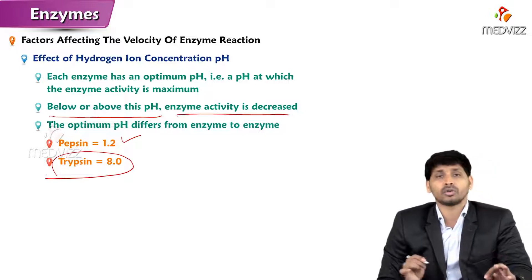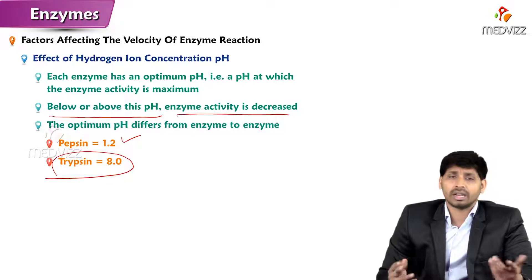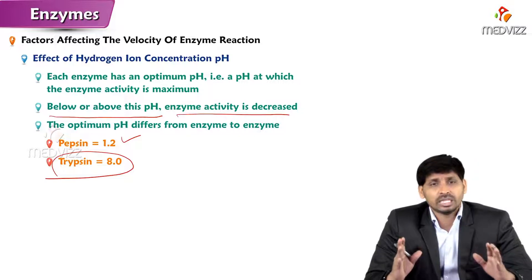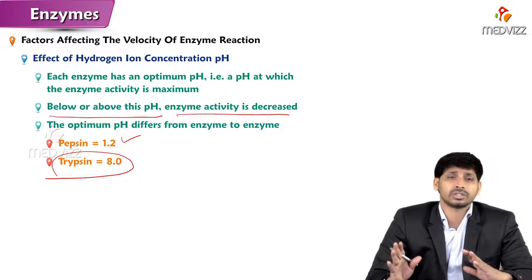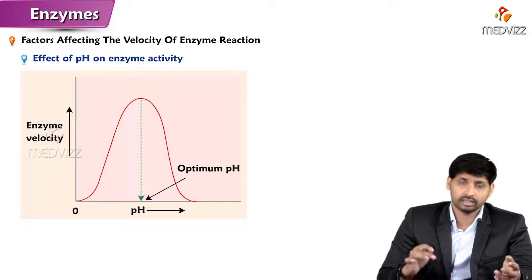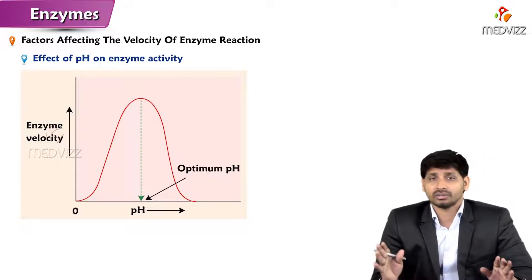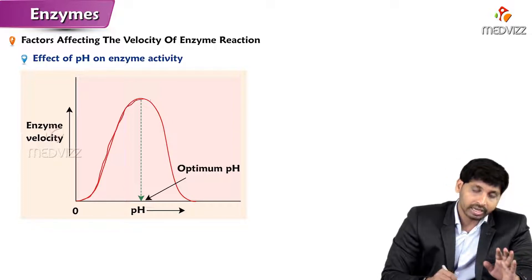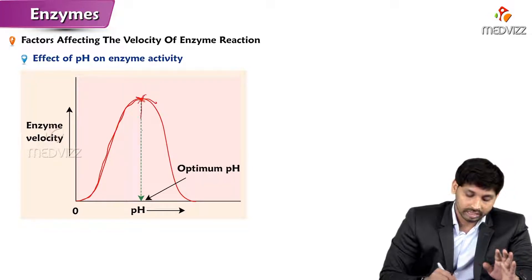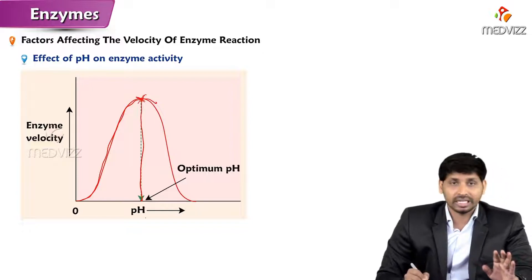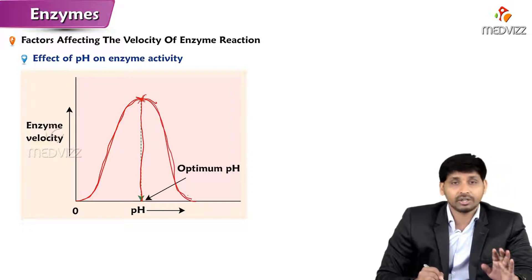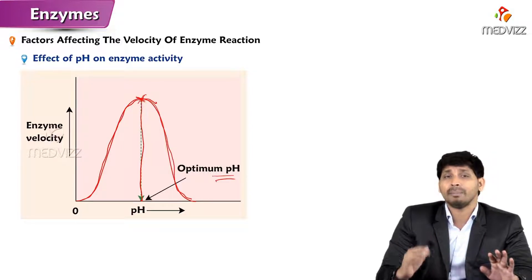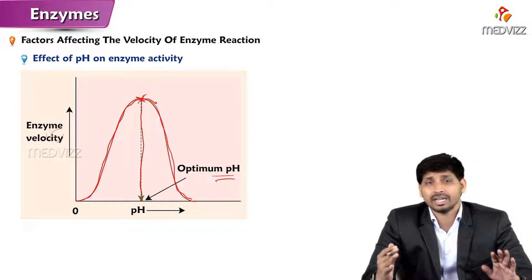Trypsin, for example, works at pH 8, which is alkaline. Each enzyme has its own optimal pH. Some enzymes work in acidic conditions, others in alkaline conditions. Any change in pH directly affects the velocity of enzyme reaction. In the graph, with increasing pH there is an initial increase, reaching a maximum at the optimal pH, and if you keep increasing the pH the enzyme activity and rate of reaction comes down.